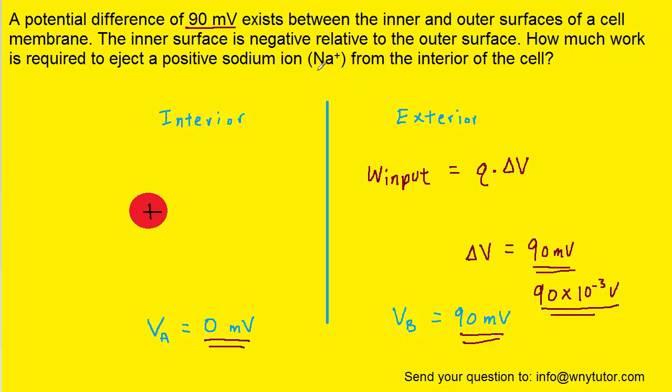For the charge, we are told that the sodium ion has a plus charge on it. Presumably that means plus 1. And so that would mean the charge is a positive 1.6 times 10 to the minus 19th coulombs. Note that we have to use a charge in coulombs. We can't just use plus 1 because that's a non-standard unit.